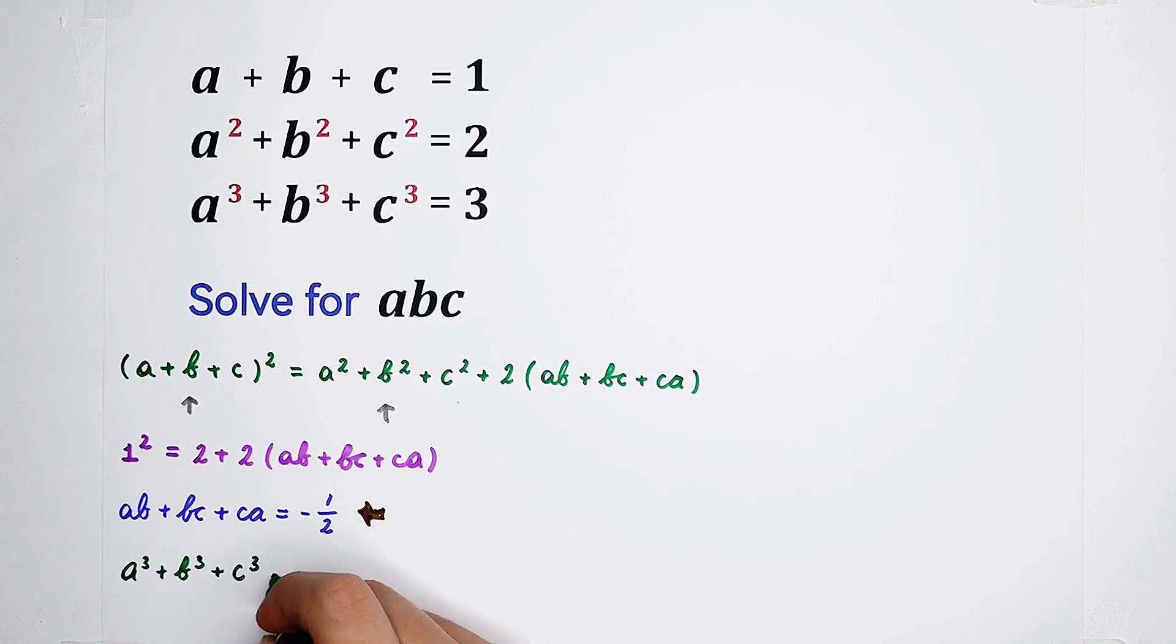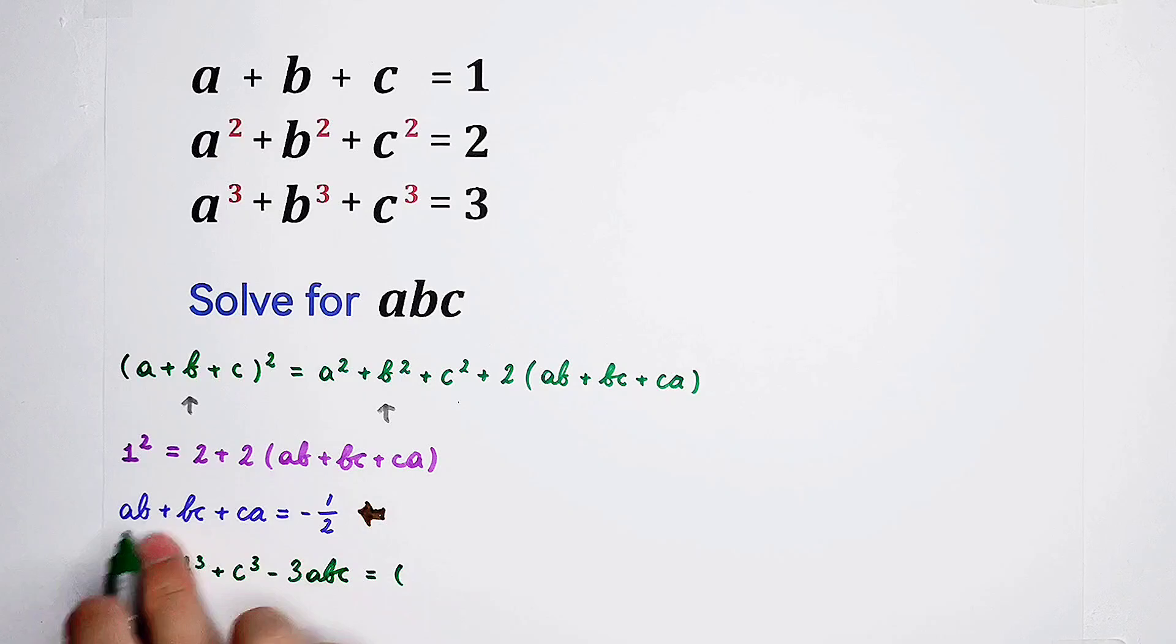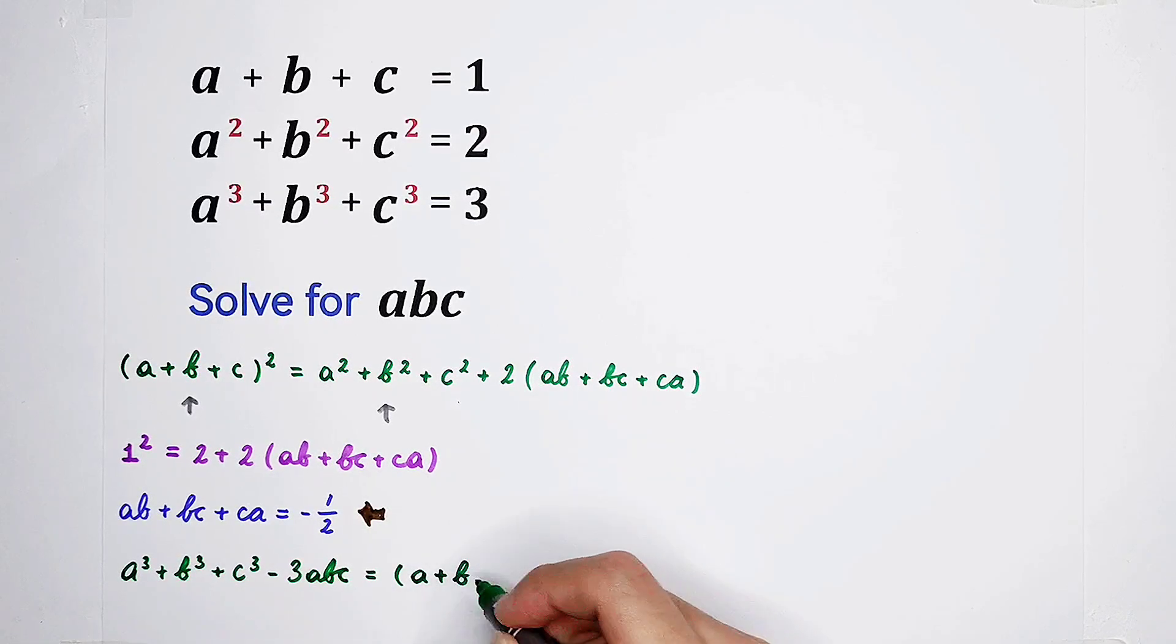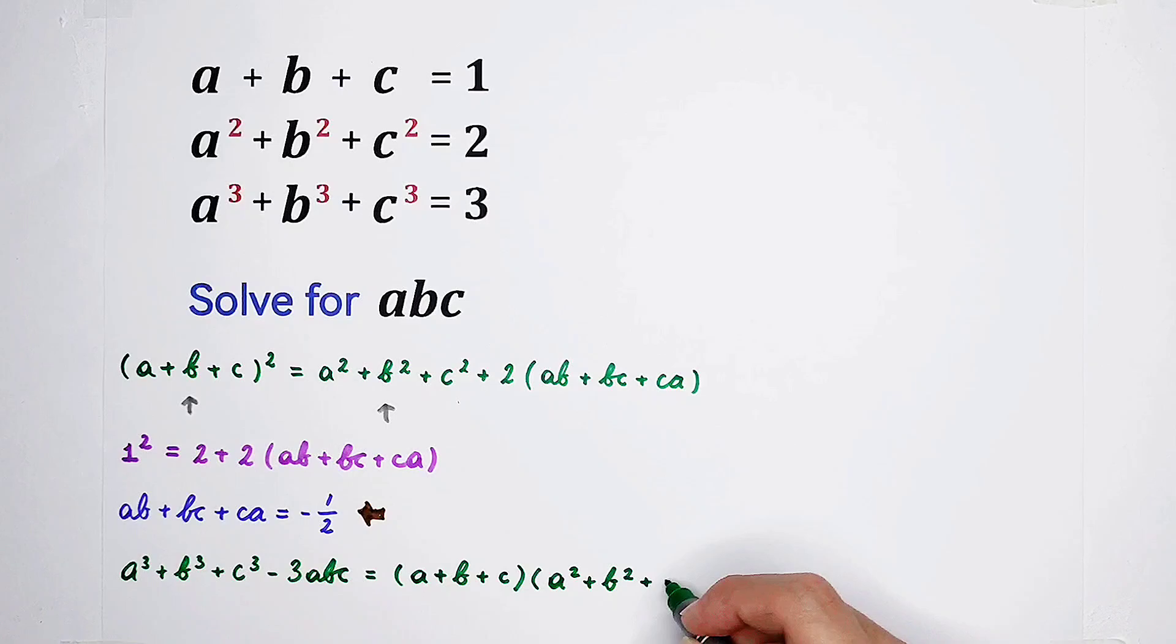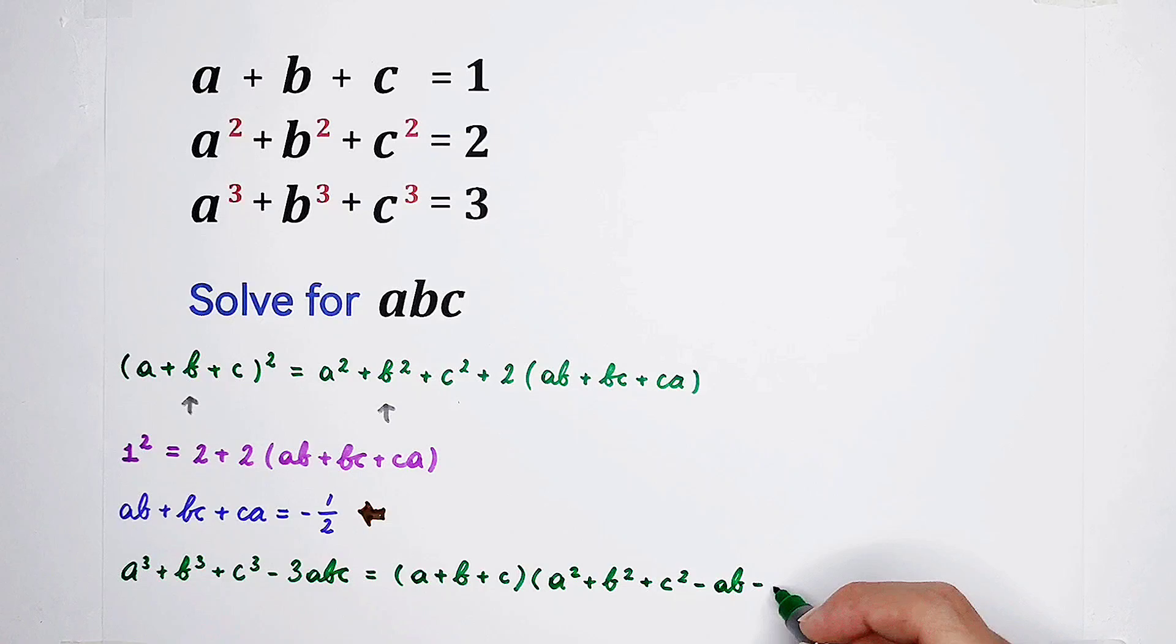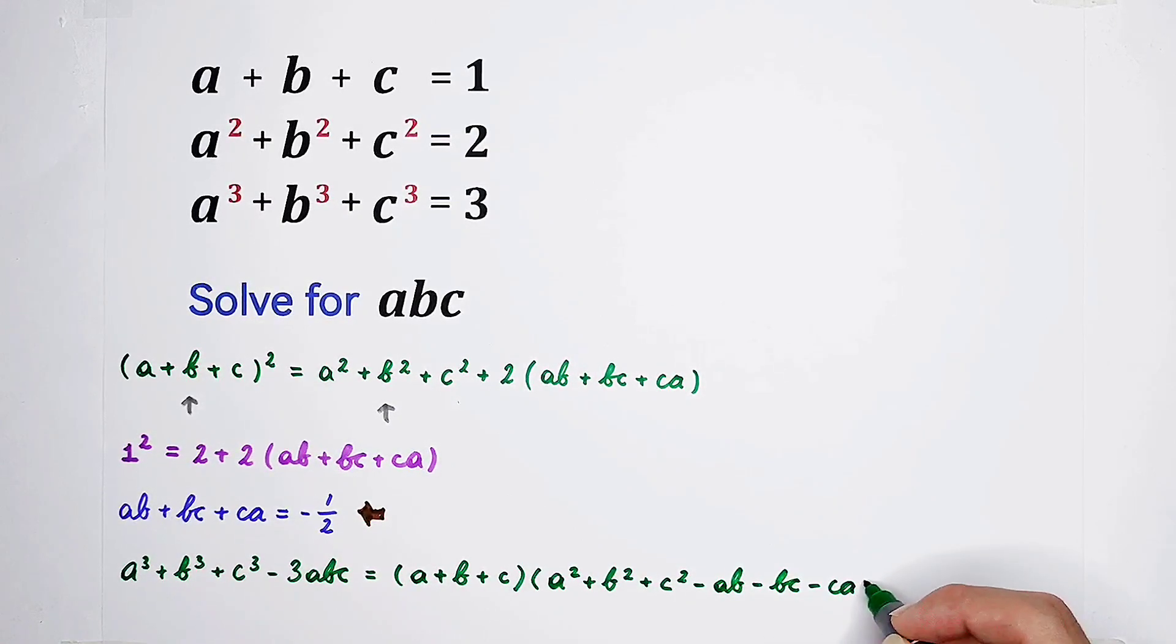The sum of a cubed, b cubed, and c cubed minus 3 times ABC equals the factorization: a plus b plus c times a squared plus b squared plus c squared minus AB minus BC minus CA. Oh, sorry, I didn't write it so straight. Not only this one, but this one as well. My god. Please forgive me.